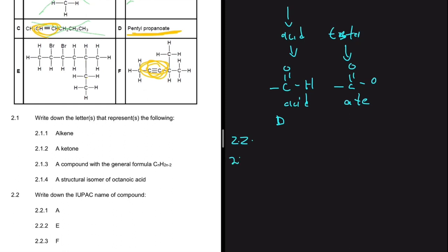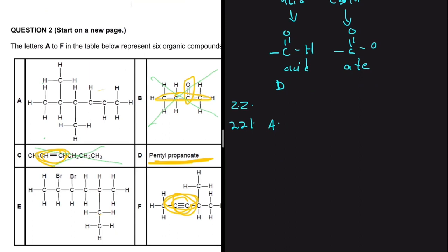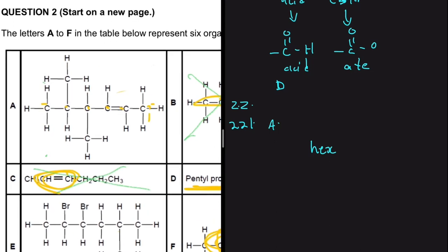Now for 2.2, let's write the IUPAC name of compound A. First, identify the longest carbon chain: counting gives us six carbons, so the prefix is 'hex'. Then we look for the side that leads to the functional group first. Starting from one side gives us the functional group on carbon 2, so it's 'hex-2-ene'.